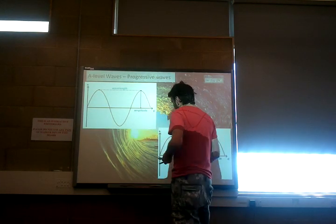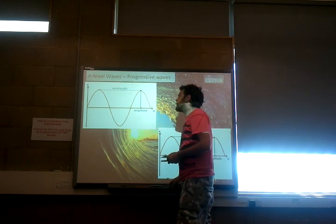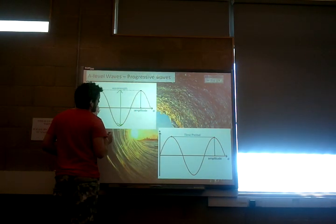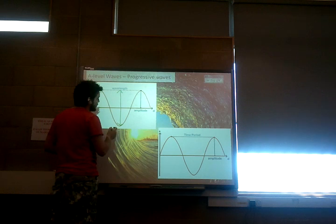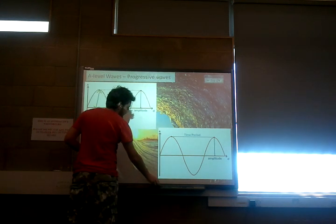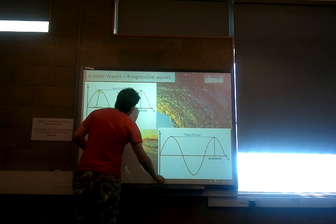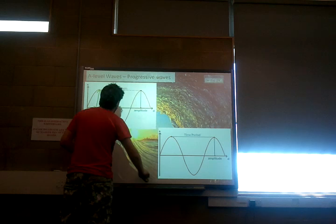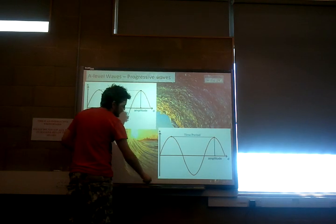Amplitude is the measurement of maximum disturbance. Remember, it's not measured from peak to trough — it's from the peak down to the zero disturbance line, or from the trough up to the zero disturbance line. If you measure peak to trough, you need to halve it to get the amplitude.